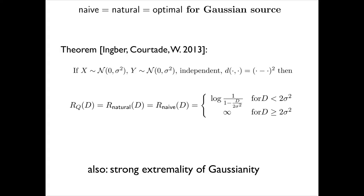At least in the Gaussian case, this natural architecture is in fact optimal. When X and Y are independent Gaussian and similarity is squared error, the natural architecture is optimal and you get the expression by substituting the well-known quantities from lossy compression of Gaussian sources. Also notable: one can show the strong extremality of the Gaussian distribution — not only are the fundamental limits worst-case under Gaussianity, but in fact the scheme that achieves this optimum will do at least as well on non-Gaussian data. So it's a very robust scheme.